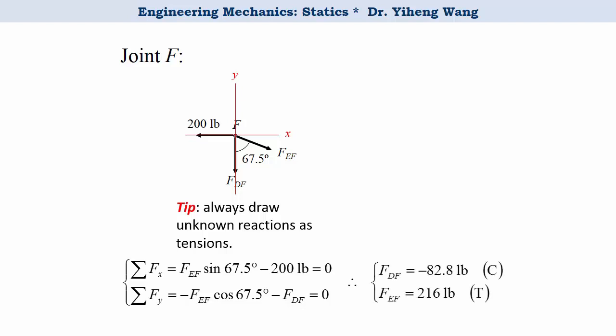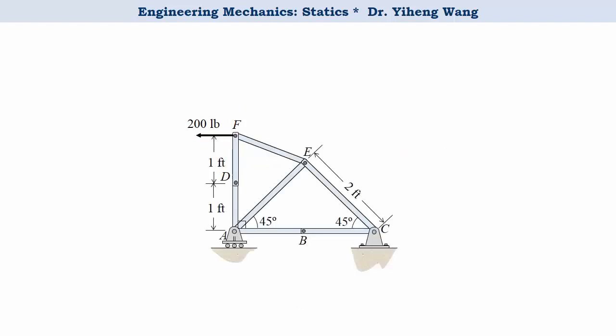As you can see, force FEF is positive, indicating tension force, therefore noted by a letter T, and force FDF is negative, indicating a compression force, therefore noted by a letter C. And now we know all the forces acting at joint F. We can make a note on the original graph of the forces that have been solved.